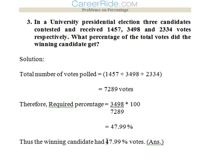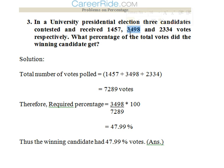Third question: In a university presidential election, three candidates contested and received votes of 1457, 3498, and 2334 respectively. What percentage of the total votes did the winning candidate get? The highest vote which a candidate got was 3498, so he won the election. We need to find out what percentage 3498 is of the total votes cast.